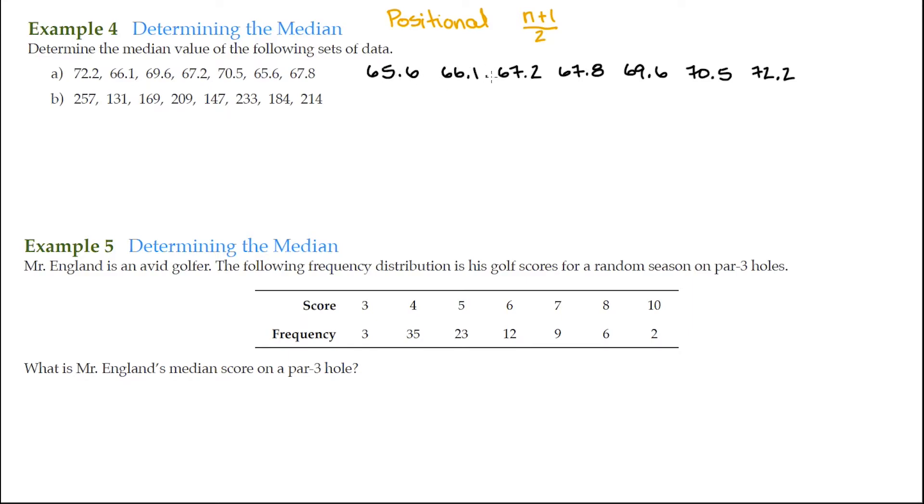There are 1, 2, 3, 4, 5, 6, 7 data values. So the position that we're looking for, and this is an odd set of values. So if I did 7, that's the number size of the data set, plus 1, divided by 2, that's going to be 8 divided by 2. So position 4.